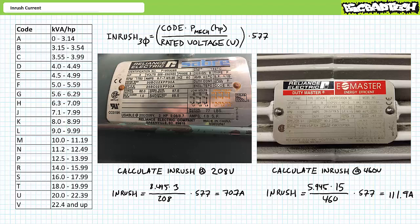Motors with a kilovolt ampere per horsepower constant at the upper end of the alphabet nearer to A exhibit less inrush than a similarly rated motor with a constant in the lower depths of the alphabet nearest to V. Additionally, these examples illustrated that inrush, although brief, can put a tremendous strain on the electrical distribution system that must be anticipated in advance.